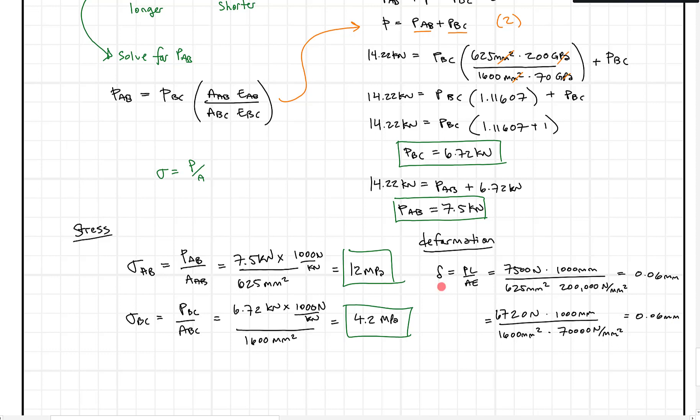So whether it's getting longer in AB for the deformation in AB, or if it's getting shorter in the deformation in BC, either way, it's going to be 0.06 millimeters to the right. So joint B moves to the right. And we can box that in, because that is the correct answer, or the correct solution here. So that's pretty cool.